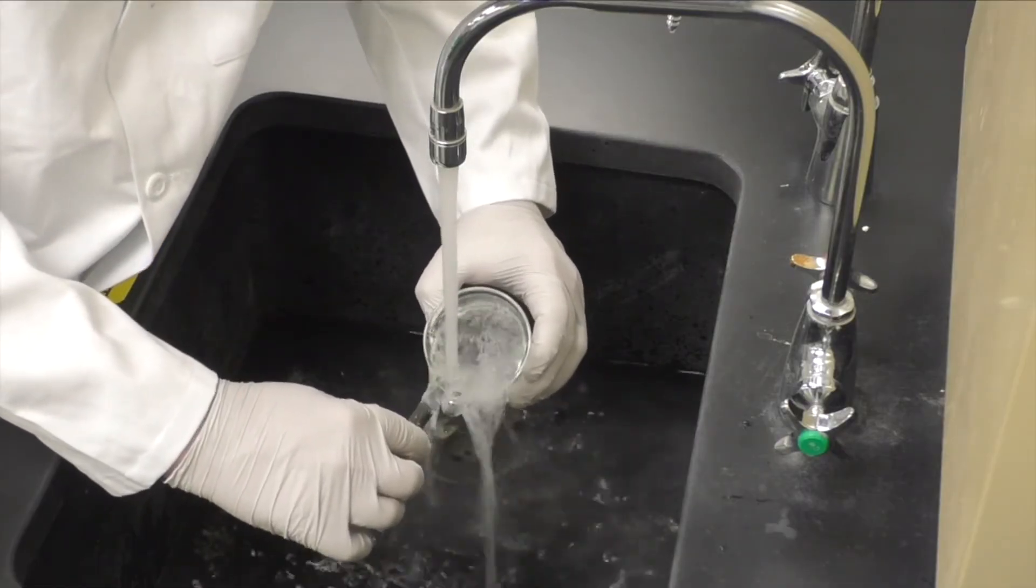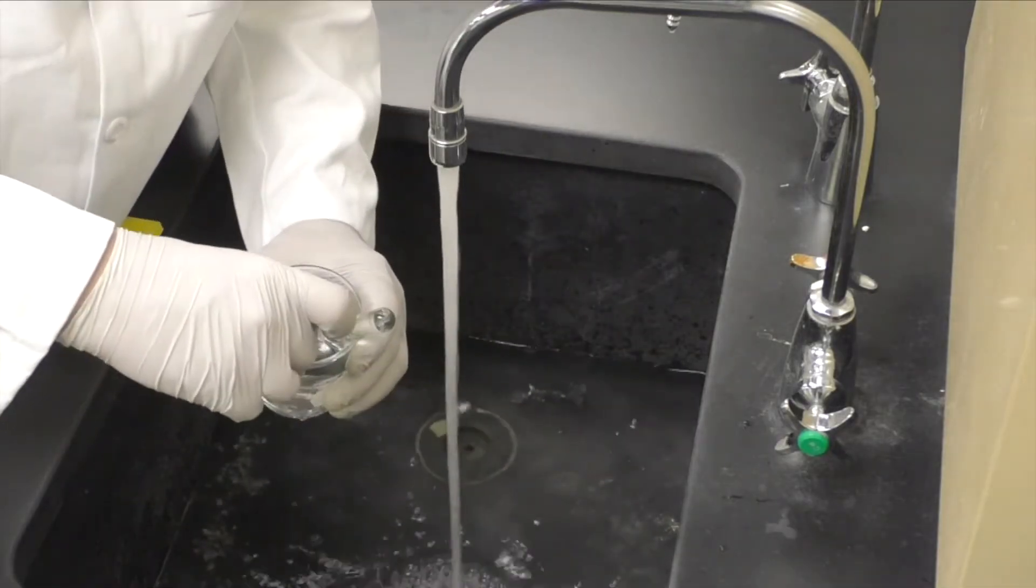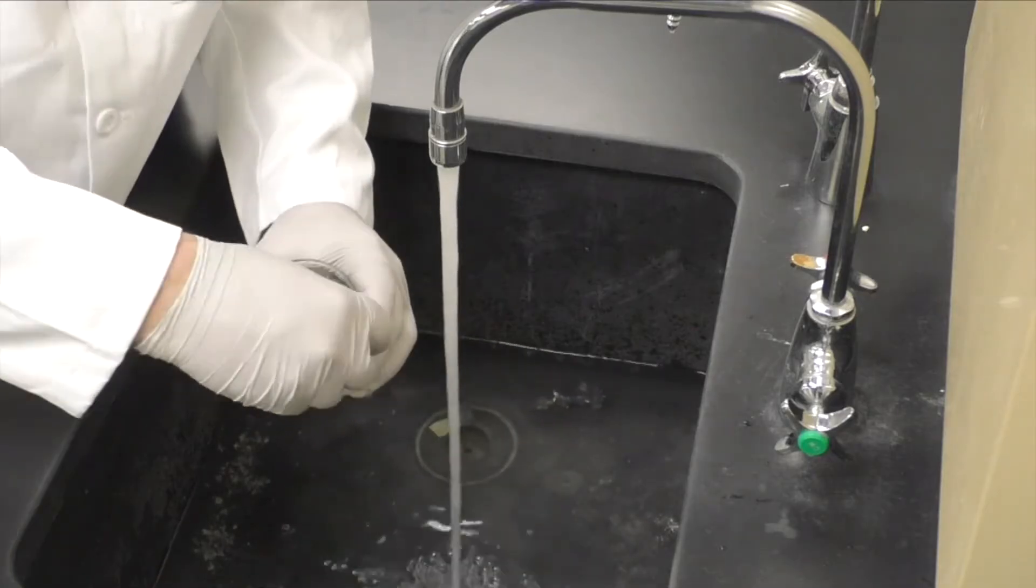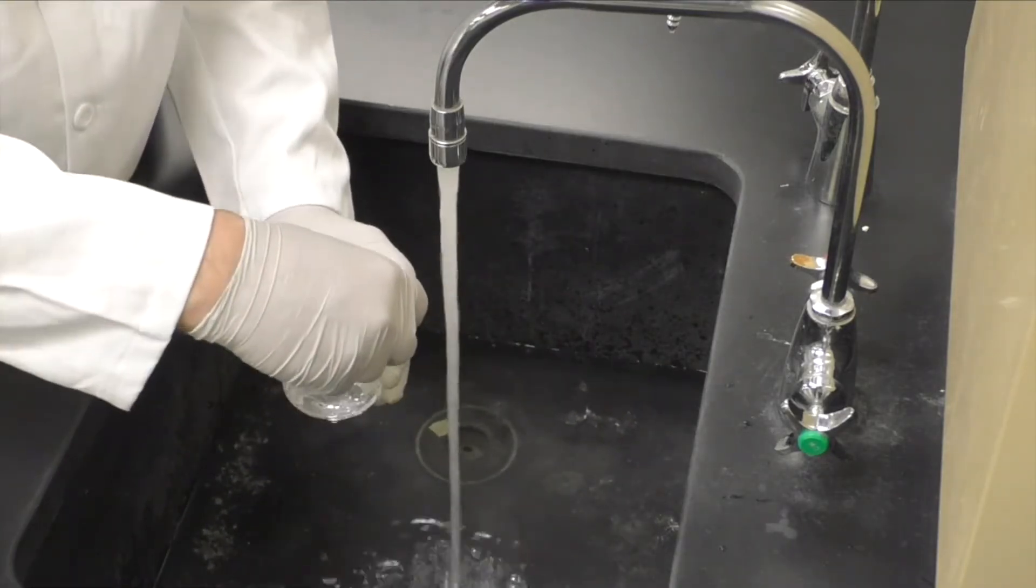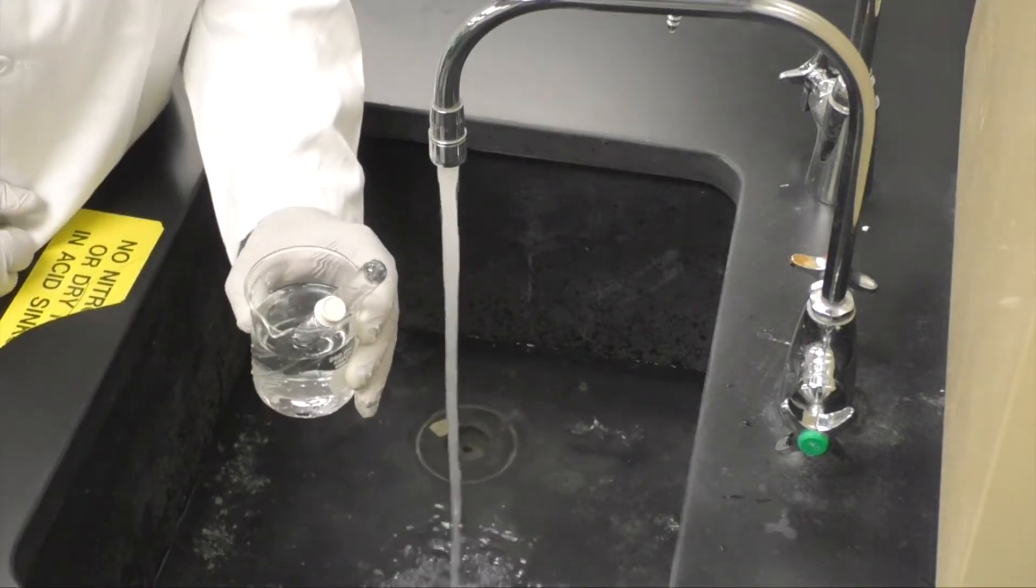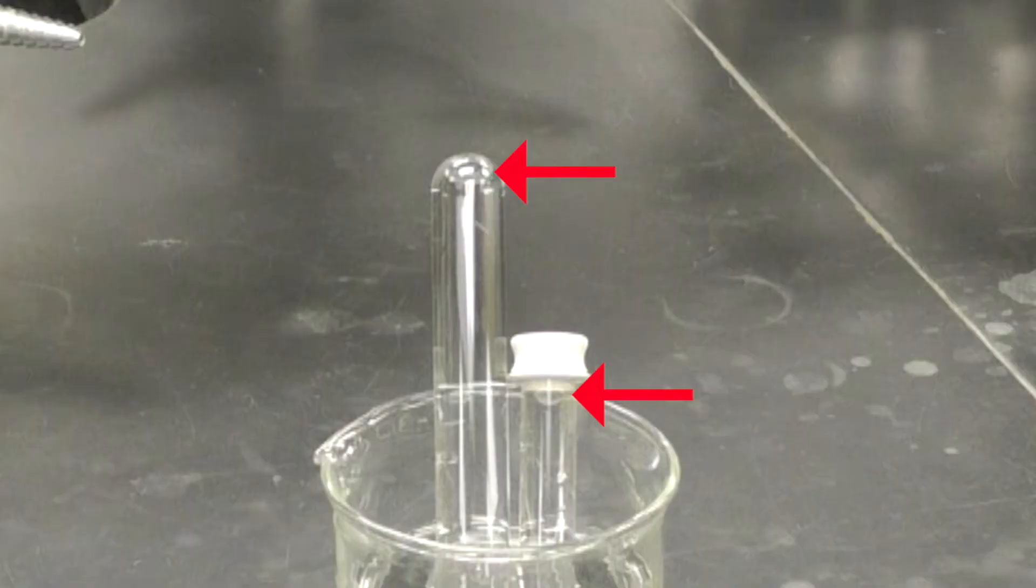Repeat the process with the gas collection tube. Then pour a little bit of the water out of the beaker so that it is only about two-thirds full. If you have a small air bubble at the top of each tube, that's fine.